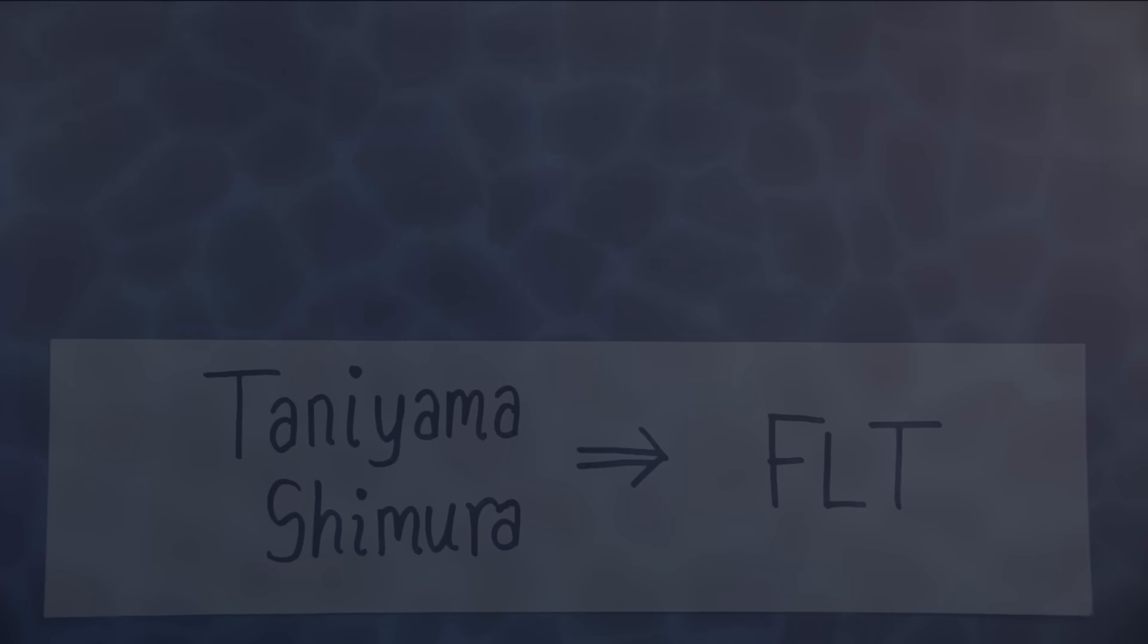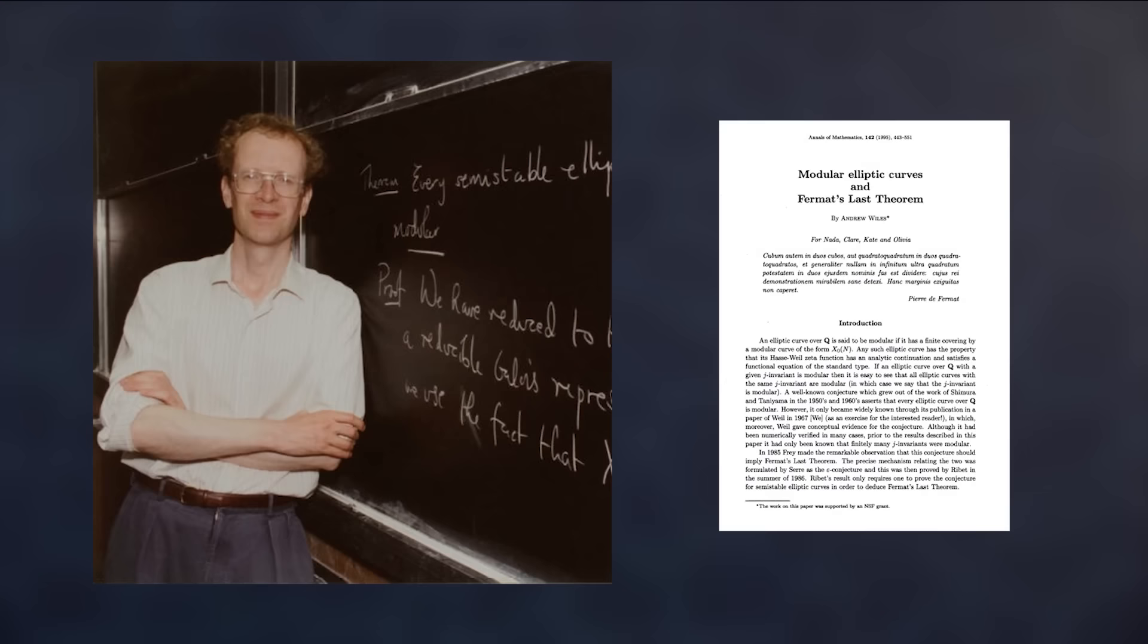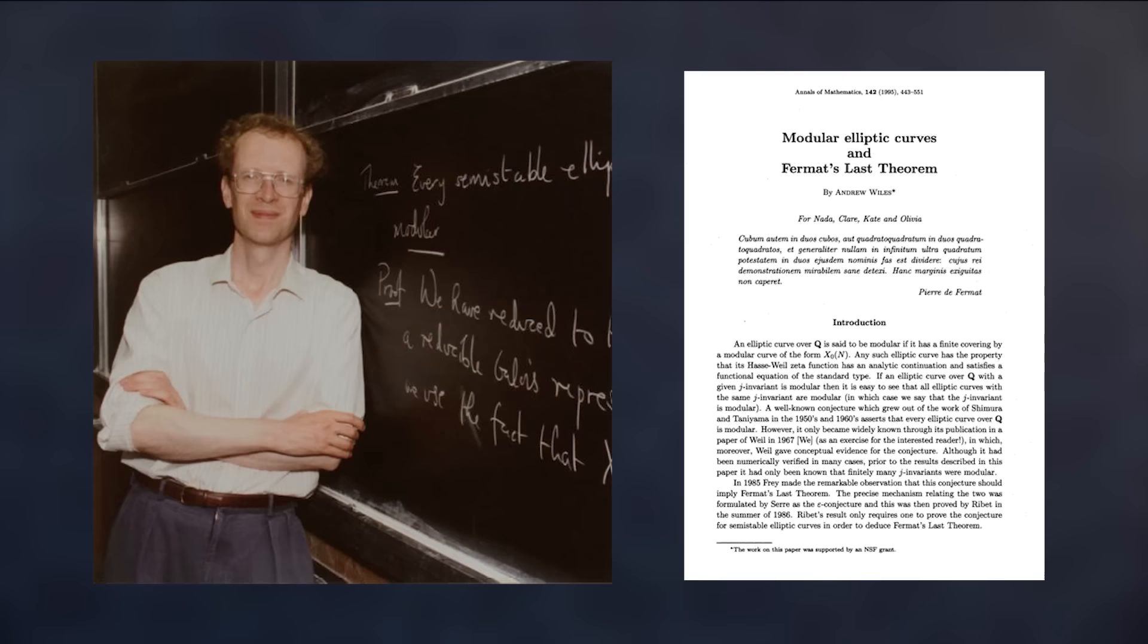There was a joke at the time that this was reducing one impossible problem to another equally impossible problem. But unbeknownst to the rest of the math world, somebody had been working in secret to prove the Taniyama-Shimura conjecture for seven years. And in September 1994, Andrew Wiles announced that he could prove enough of the Taniyama-Shimura conjecture that Fermat's Last Theorem would then follow.